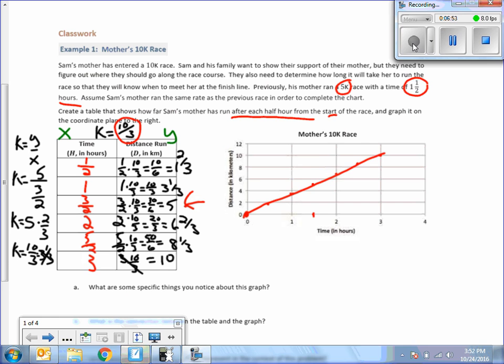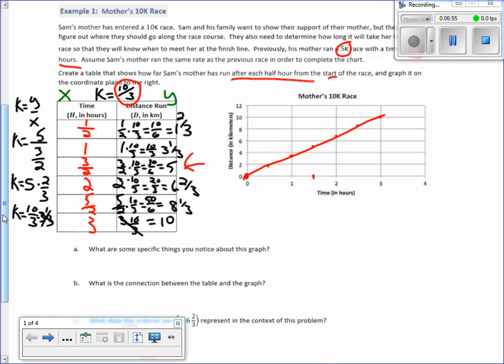The next question, A, says what are some specific things you noticed about this graph? Well, all the points are on a straight line and it goes through the origin, so therefore it's proportional. What is the connection between the table and the graph?